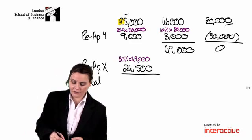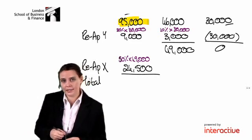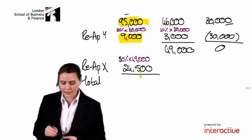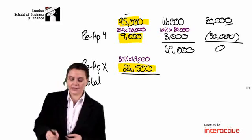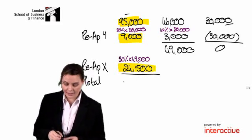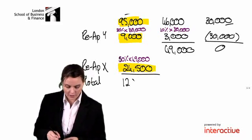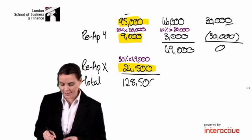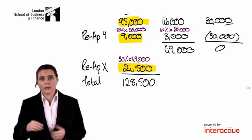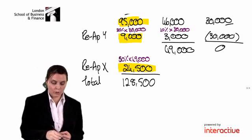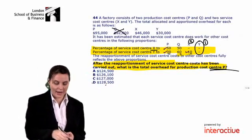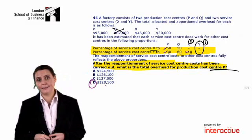The total cost for department P is the original $95,000, plus $9,000 from Y, plus $24,500 from X, giving us $128,500. Checking back, the correct answer is D.